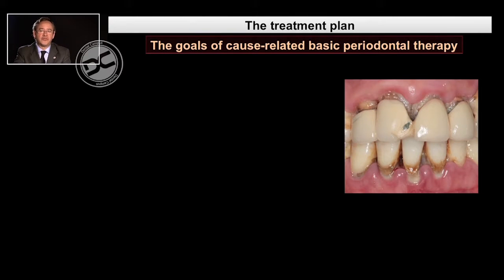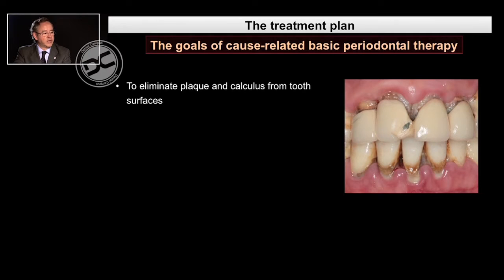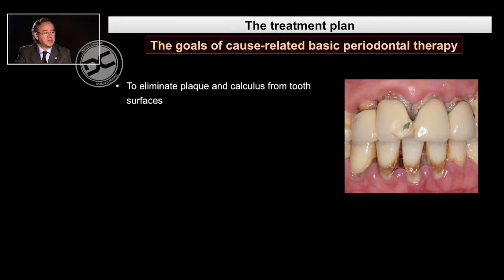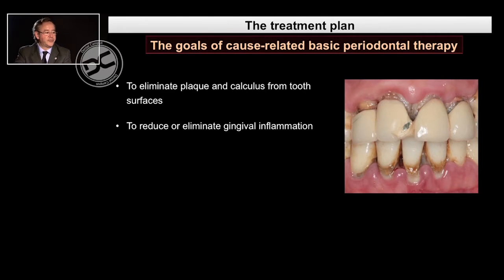Let's start first with the goals. What are the goals of cause-related periodontal therapy? If we look at ways to control the etiology of periodontal diseases, we need to eliminate plaque and calculus from tooth surfaces.